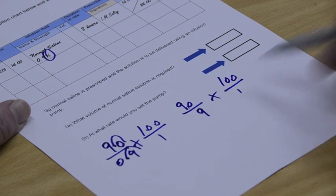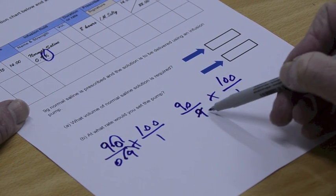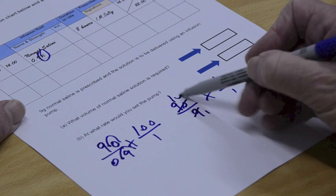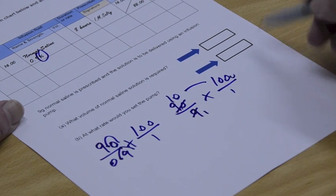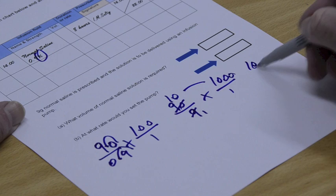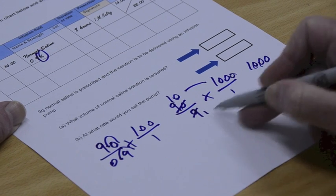So again, this should be fairly easy. How many 9's there? 1. How many 9's there? 10, and 10 times 100, you just add on a 0, really, don't you? To give you 1,000, and it's 1,000 over 1.